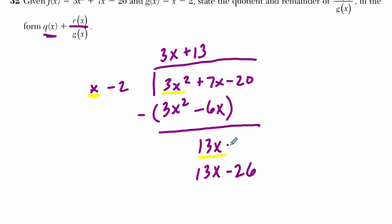And I'm going to bring down this minus 20 here so I can subtract them out. Okay. 13x minus 13x is nothing, but negative 20 minus a negative 26 is negative 20 plus 26, so it's 6.